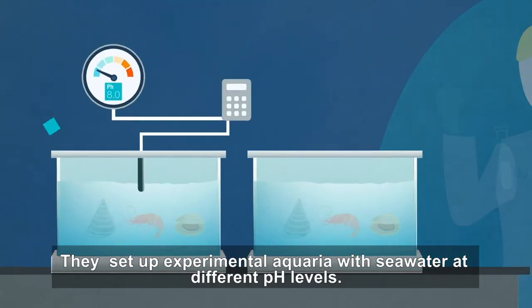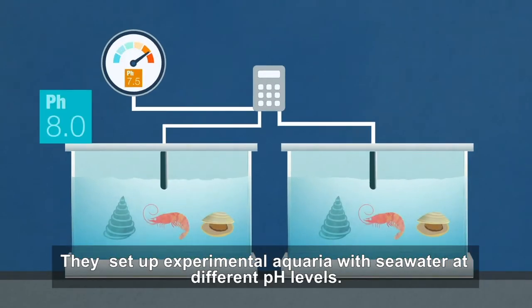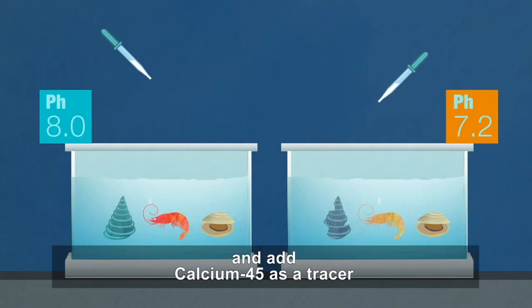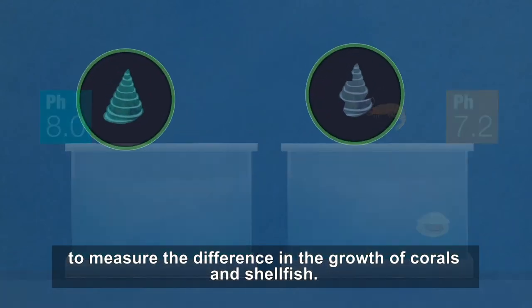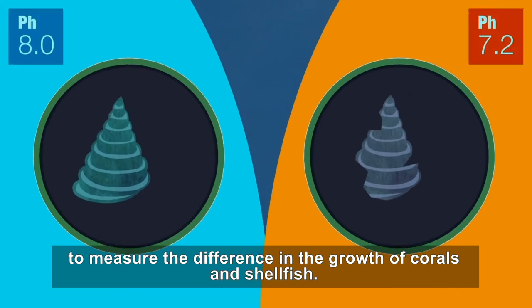They set up experimental aquaria with seawater at different pH levels and add calcium 45 as a tracer to measure the difference in the growth of corals and shellfish.